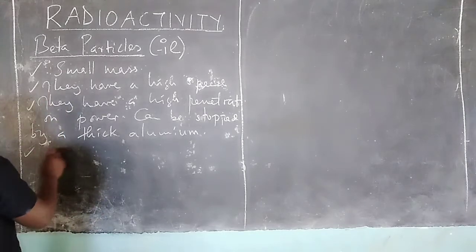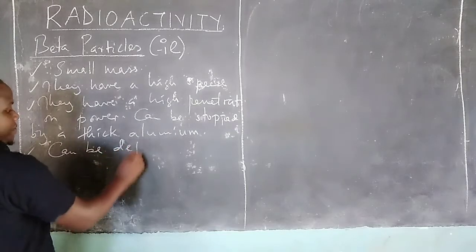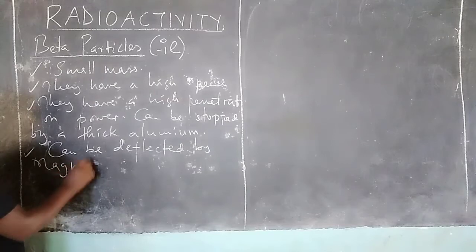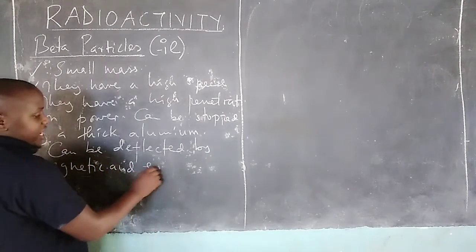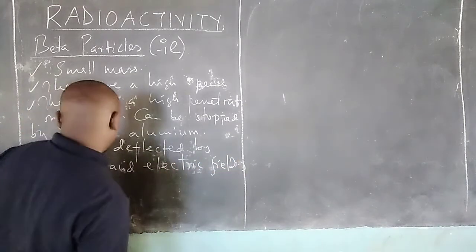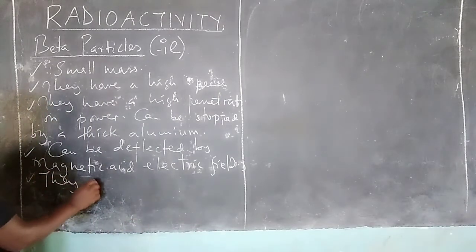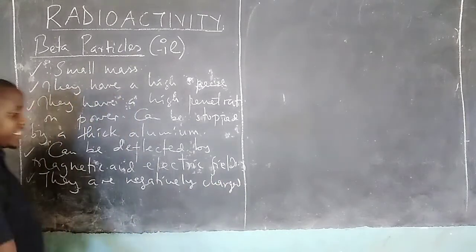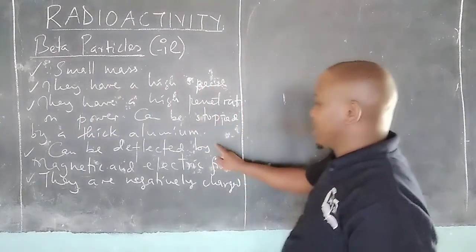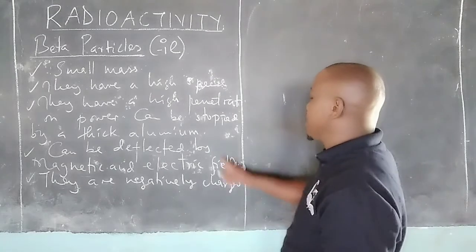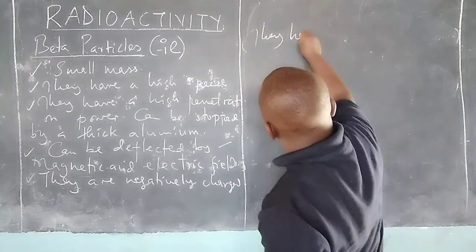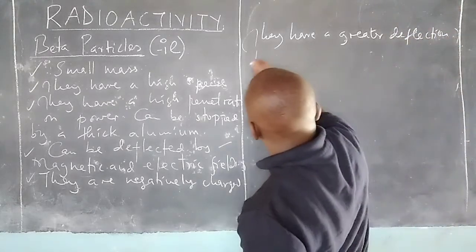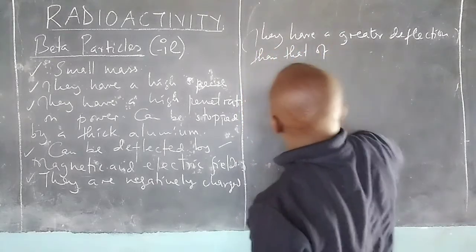We see that beta particles can be deflected by magnetic and electric fields since they are negatively charged. Even though there is a deflection, we shall say that the deflection is greater. They have a greater deflection than that of the alpha particles.